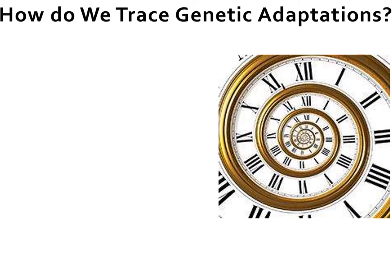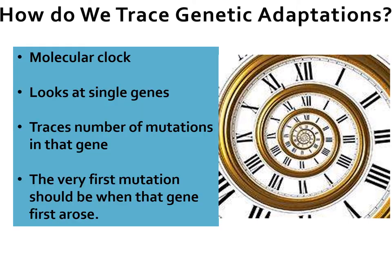Some physiology studies focus on the genetic end of adaptation. A lot of responses to environmental stressors over time will lead to adaptation via genetics. We use something called the molecular clock, which looks at single genes and traces the number of mutations in that gene. The very first mutation should be when that gene first arose within our gene pool. So we can trace how long a genetic adaptation has been within our species using the molecular clock.